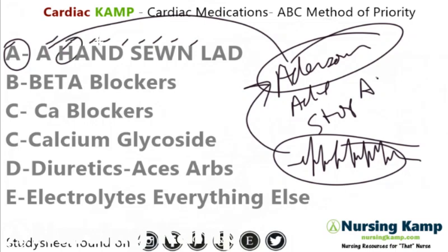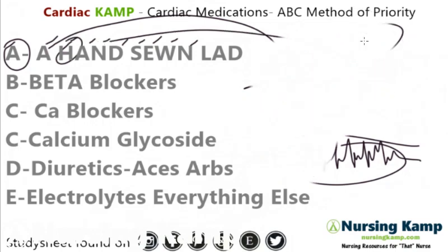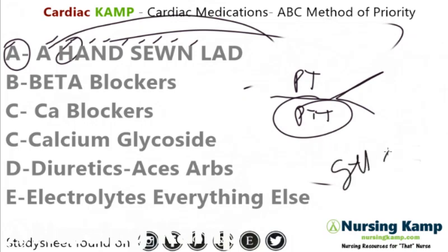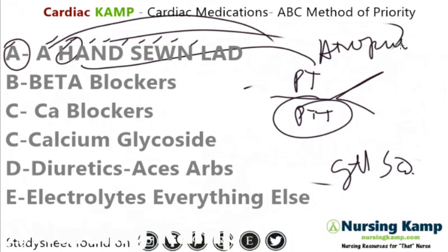H would be heparin, and heparin is important because there are medications you need to know about — protamine sulfate. You need to know that you monitor the PTT, and heparin drips versus sub-q heparin. A is atropine, and atropine is also acute because it is for symptomatic bradycardia. N is nitro, D is dopamine, S is streptokinase, E is epinephrine, W is warfarin.